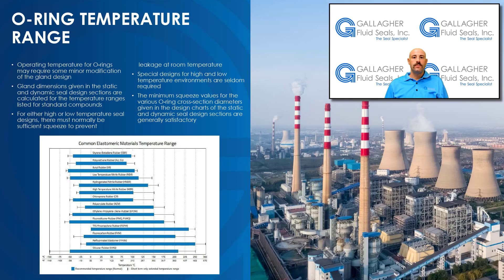Operating temperature, or more properly, the range of system temperature, may require some minor modification of the gland design. Gland dimensions given in the static and dynamic seal design sections are calculated for the temperature ranges listed for standard compounds. If the operation is only to be at high temperatures, gland volume may need to be increased to compensate for thermal expansion of the O-ring. Conversely, for operation at a low temperature, a better seal may result by reducing the gland depth, thereby obtaining the proper squeeze on the contracted O-ring.